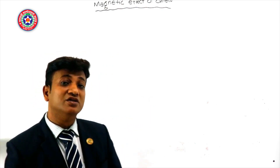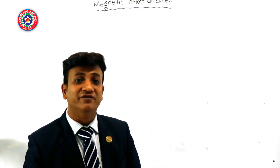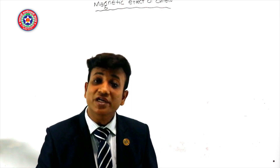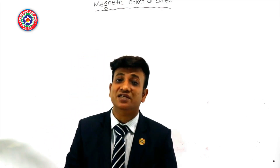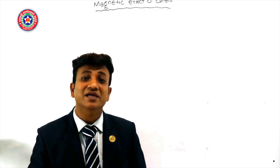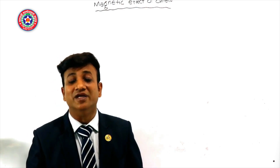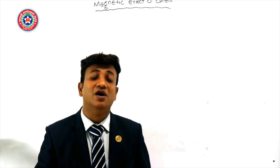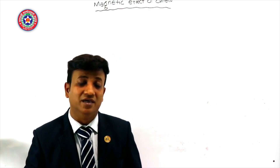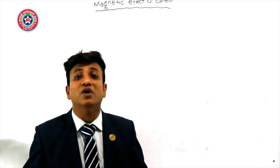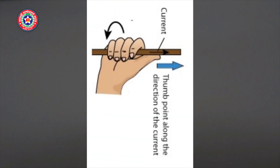The very important question is: why does current produce a magnetic field? According to Ampere, a magnetic field is produced whenever an electric charge is in motion. The spinning and orbiting of the nucleus of an atom produces a magnetic field, as does electrical current flowing through a wire.